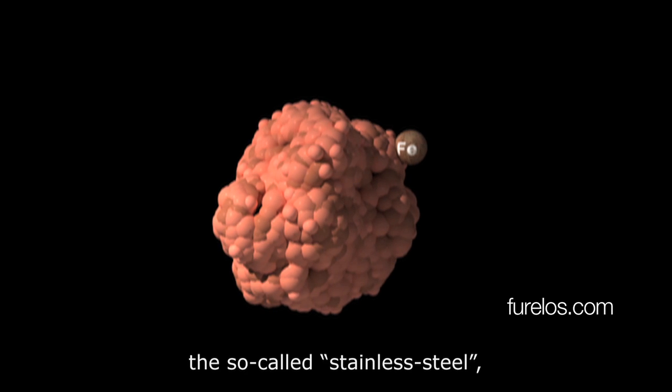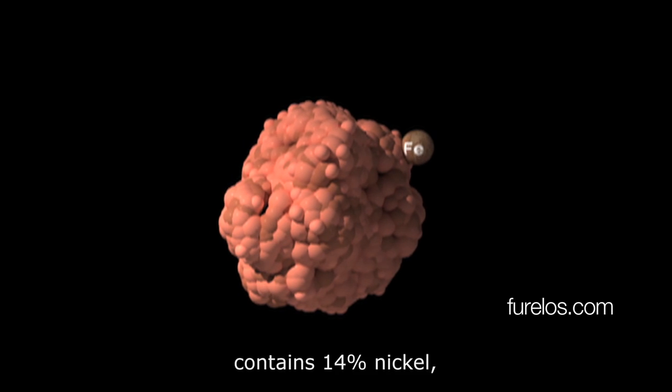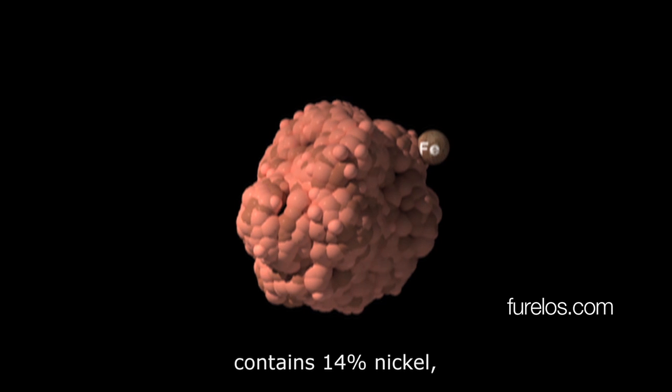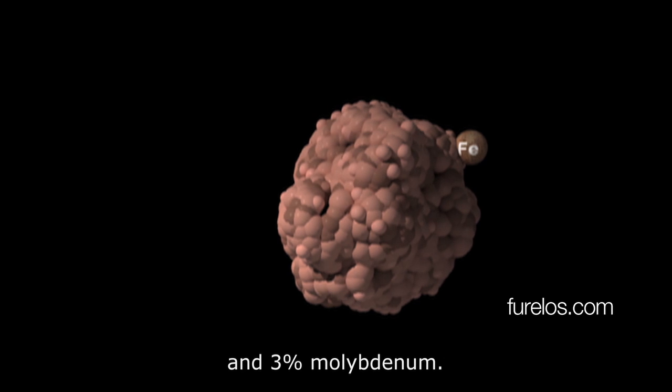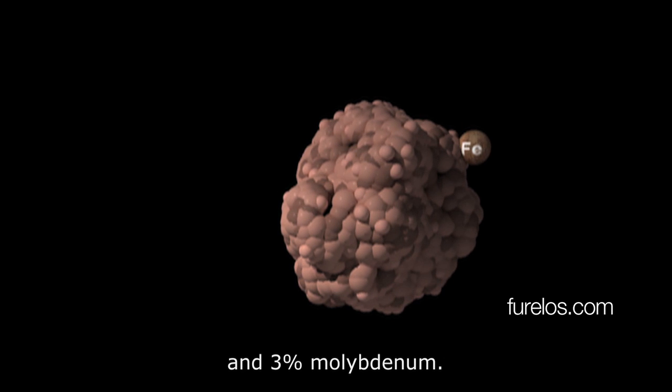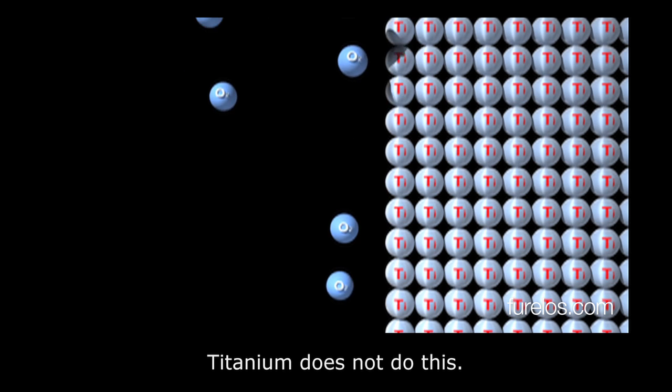In addition to steel, the so-called stainless steel, which also oxidizes, contains 14% nickel, 18% chromium, 2% manganese, and 3% molybdenum—too many ions. Titanium does not do this.